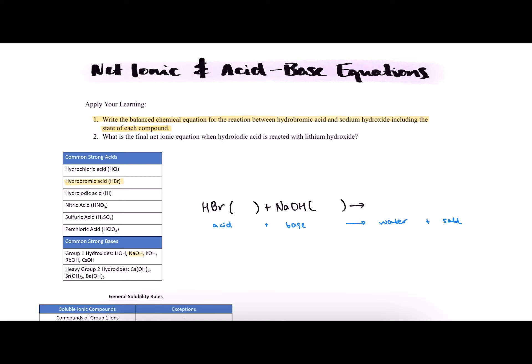So we can fill in our products with water, and then when we look at our reactants and take out the components of water, we see that the remaining salt would be NaBr, or sodium bromide.